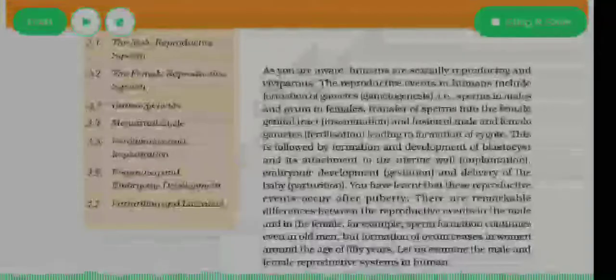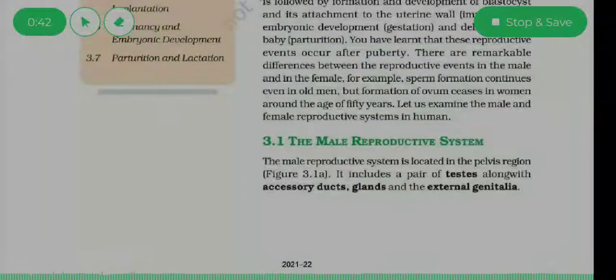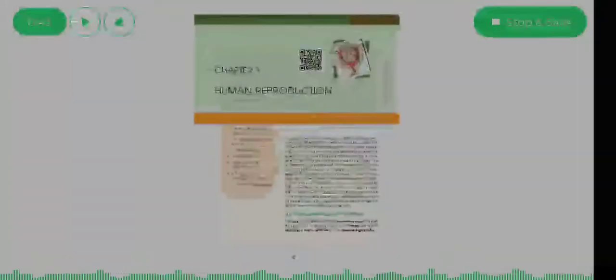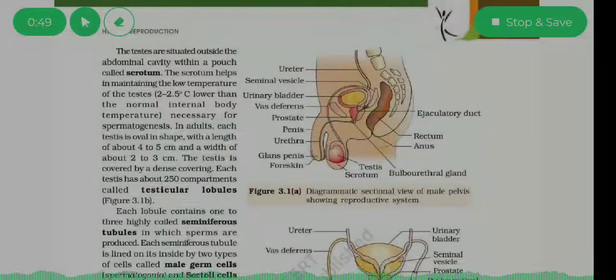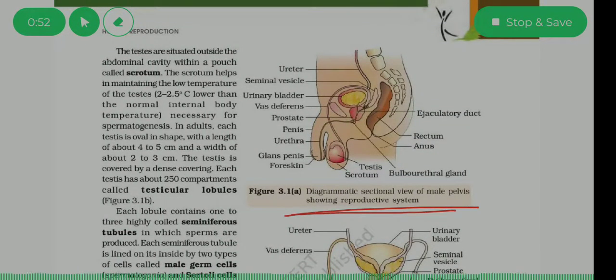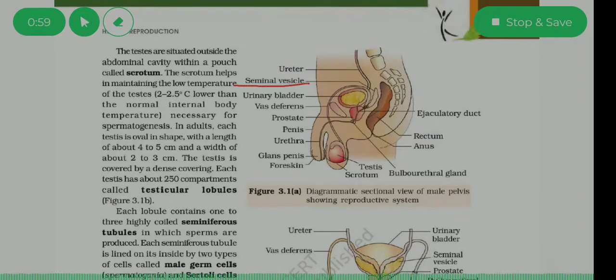We will first start with the male reproductive system. Let's look at the diagram so that some things will become clear. This is a diagrammatic section of the male pelvic region. Here we can see the ureter, seminal vesicles, and the urinary bladder, which is present in both males and females.